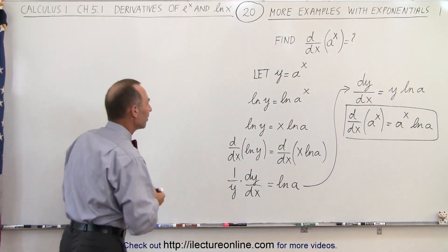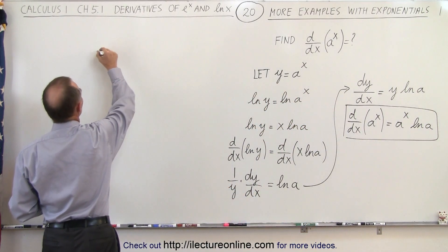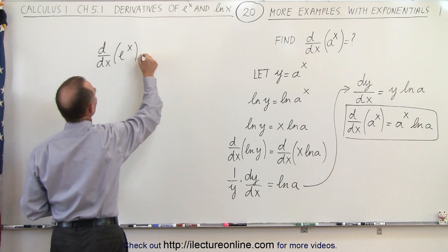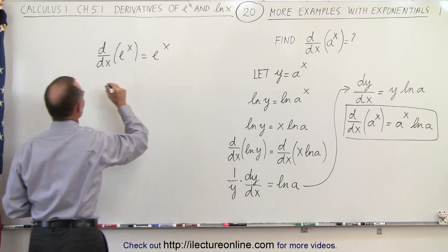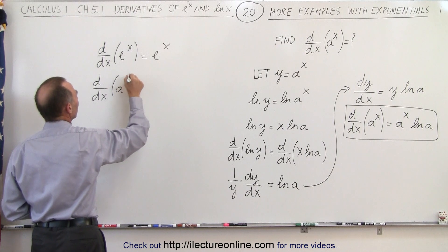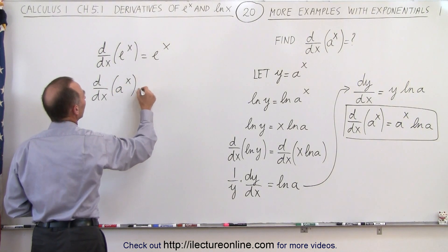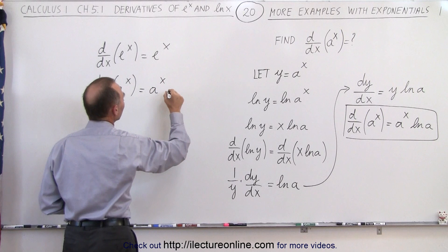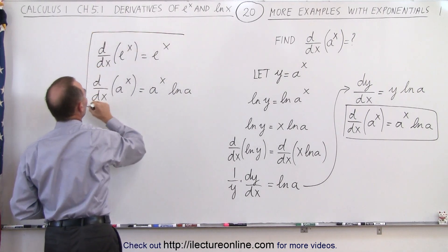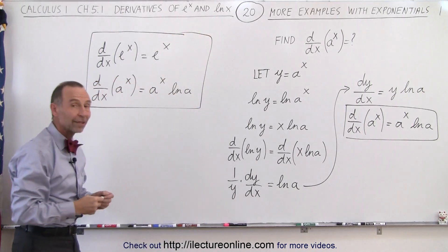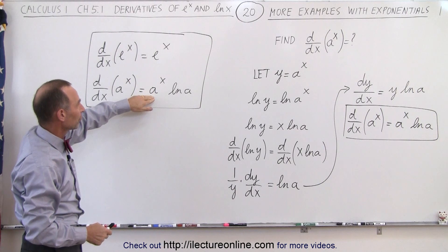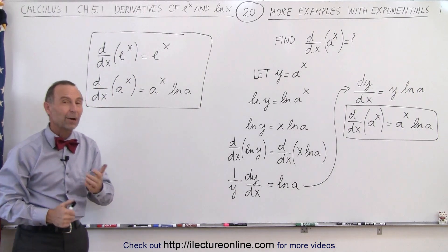Drawing that conclusion now, we can say the following: the d/dx — the derivative with respect to x — of e to the x equals e to the x. But the d/dx of a to the x, where a is just any other constant, is equal to a to the x times the natural log of a. And so now you can see the difference between taking the derivative of either the natural exponent function e to the x, or any other exponential function a to the x. And that's how it's done.